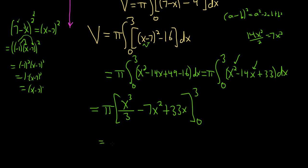So you first plug in the 3. So it'll be 3 cubed over 3 minus 7 times 3 squared, which is 9, plus 33 times 3. Plugging in 3's for all of the x's. Then you subtract, and you plug in 0. And the good news is they all go away. So you just get 0.